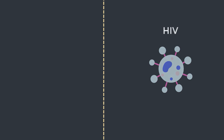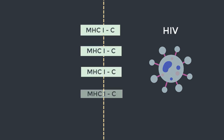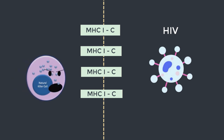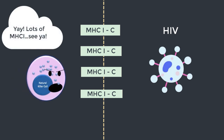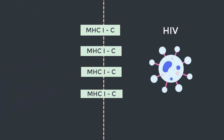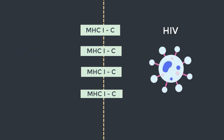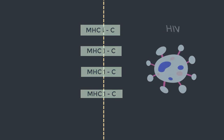One virus which takes advantage of this loophole is HIV. It can upregulate HLA class C molecules and place them on the cell surface. So now there are lots of MHC1 molecules on the surface, which have the ability to inhibit NK cells, while simultaneously flying under the T cell radar. So when it comes to HIV, neither the CD8 T cell nor the NK cell has the upper hand.